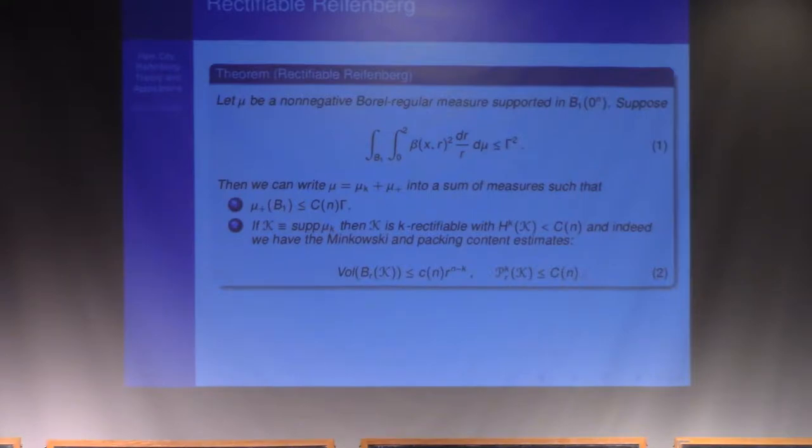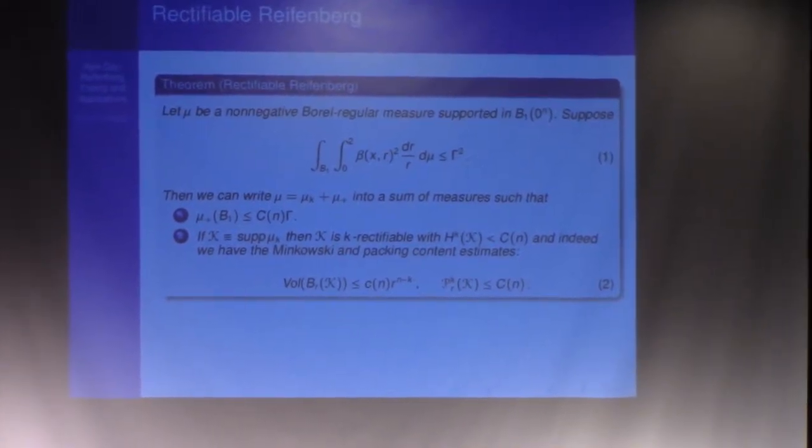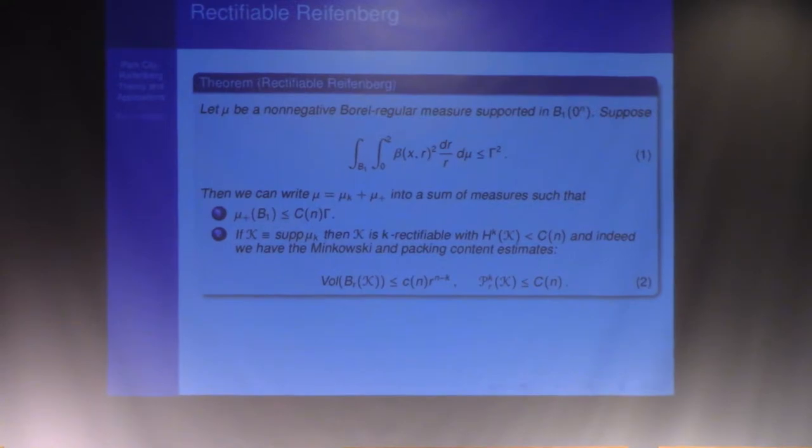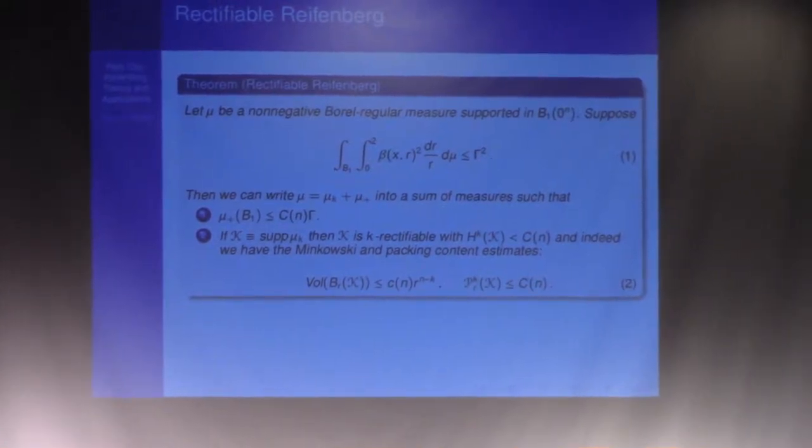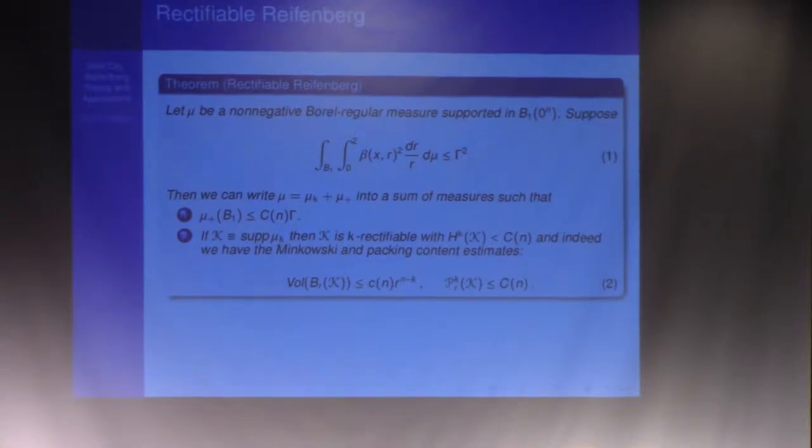So recall our examples from before said that it didn't have to have finite measure. But when it didn't, the point is it has to become support on something that's rectifiable. And conversely, it doesn't have to be rectifiable. But if it's not, it's got to have bounded measure. So we want to understand how to prove this a little bit. Let me make a few remarks, because there were some comments afterwards. First off, the measure bound is precisely gamma. So if the beta number bound there is gamma squared, then you have that the measure bound is precisely gamma.